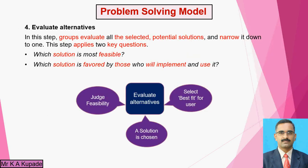Now we will see one by one these 3 remaining steps. The 4th step, or 4th model, is to evaluate. So we will evaluate alternatives. Up till now what we have done: we have defined the problem exactly, then we gathered the information — how and why it happened — and after that we came up with some solutions, not only a single solution but multiple solutions which may be applied for that particular problem.